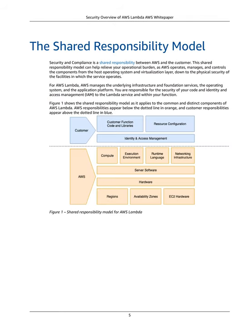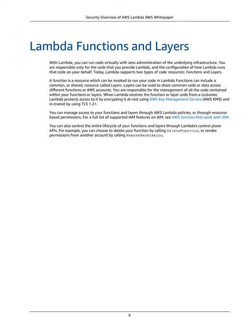The Shared Responsibility Model: Security and Compliance is a shared responsibility between AWS and the customer. This shared model can help relieve your operational burden, as AWS operates, manages, and controls the components from the host operating system and virtualization layer, down to the physical security of the facilities. For AWS Lambda, AWS manages the underlying infrastructure and foundation services, the operating system, and the application platform. You are responsible for the security of your code, IAM access to the Lambda service, and within your function — Lambda functions and layers. With Lambda, you can run code with zero administration of the underlying infrastructure.